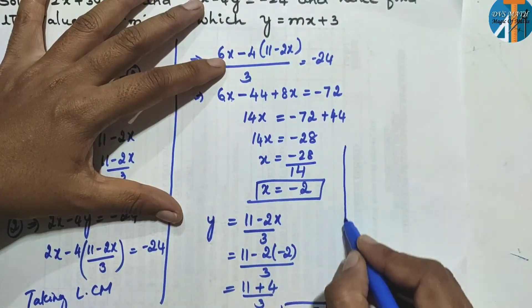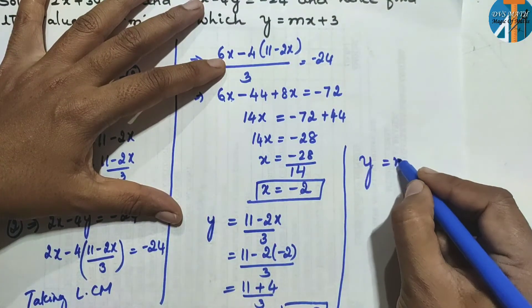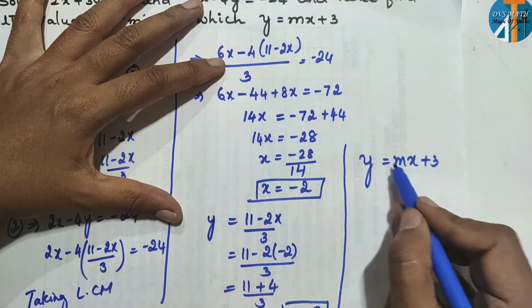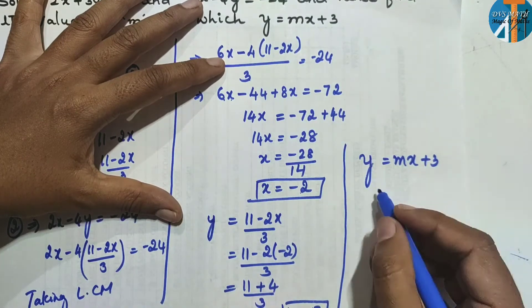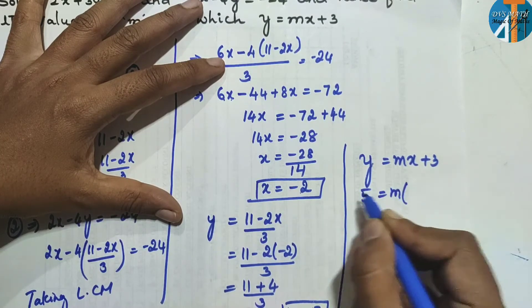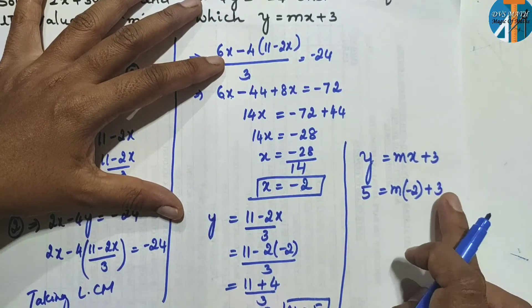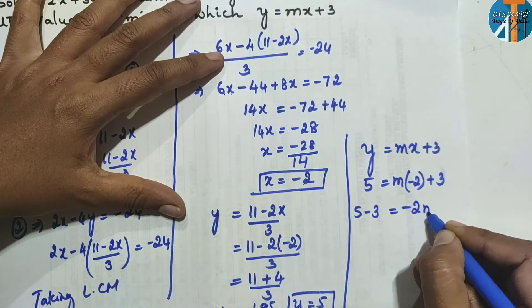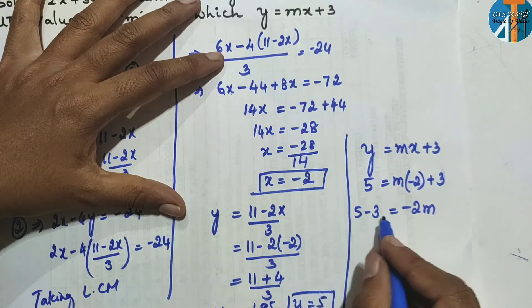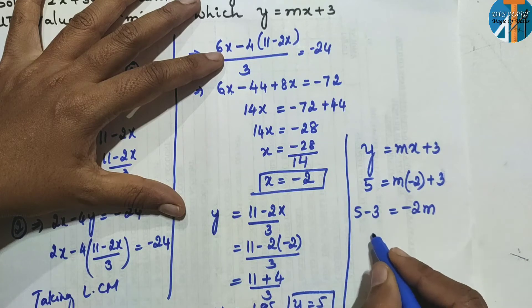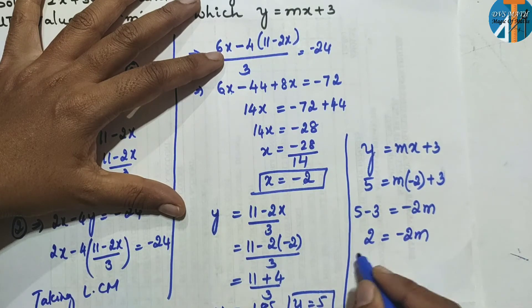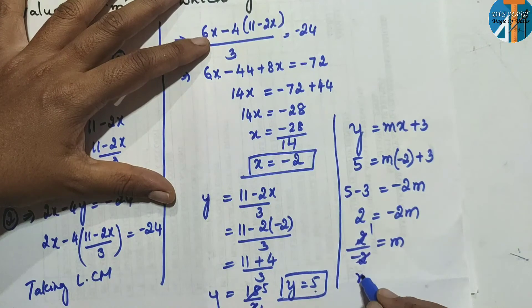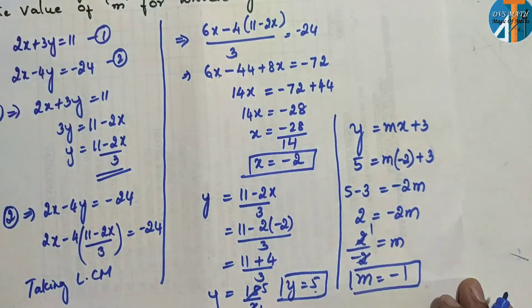Now using the given equation y = mx + 3. Substituting x = −2 and y = 5: 5 = m(−2) + 3. Taking 3 to the left side: 5 − 3 = −2m, so 2 = −2m. Dividing both sides: m = −1. The value of m is −1.